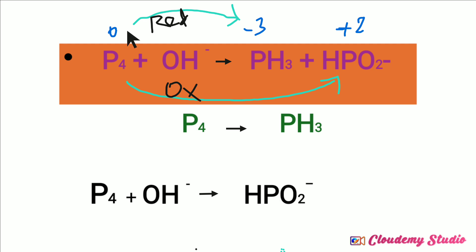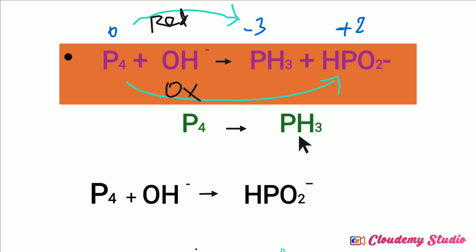When phosphorus becomes phosphine, the oxidation number changes from zero to minus three — there is a decrease in oxidation number, therefore this is a reduction reaction. The conversion of phosphorus to phosphine is the reduction half-reaction. In reduction, gain of electrons takes place, so electrons are placed on the left-hand side of the equation.